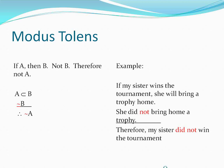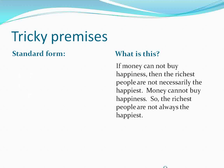Let's make it a little trickier. What sort of argument is this: If money cannot buy happiness, then the richest people are not necessarily the happiest. Money cannot buy happiness. So, the richest people are not always the happiest. There are a lot of 'nots' here, but let's start simply and see if we can identify anything critical. First, there is an if-then statement, so we represent that symbolically. A good premise A is 'money cannot buy happiness.'